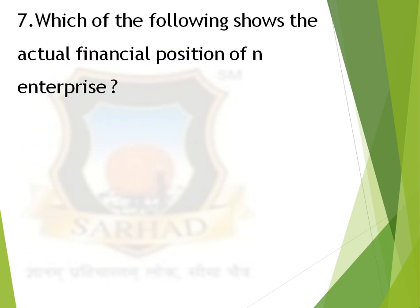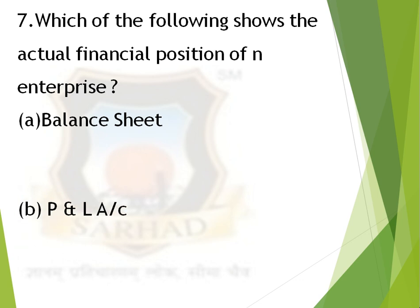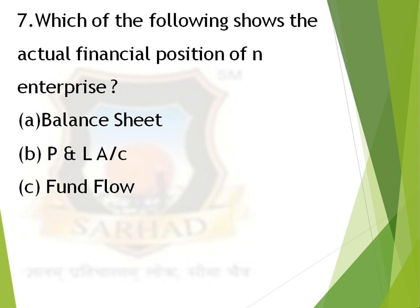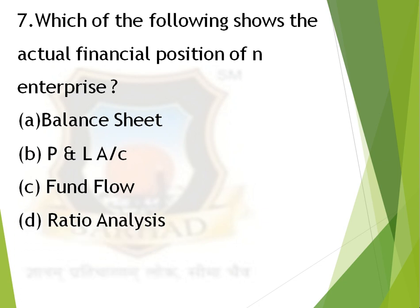Next question: which of the following shows the actual financial position of an enterprise? First option, balance sheet; second option, profit and loss account; third option, fund flow; and fourth option, ratio analysis. The correct answer is balance sheet.